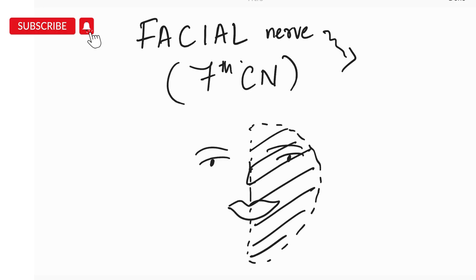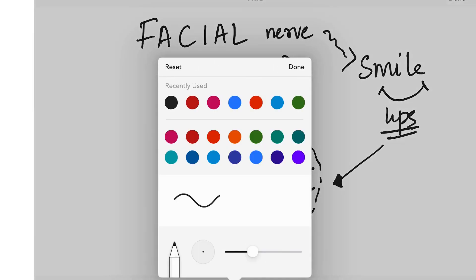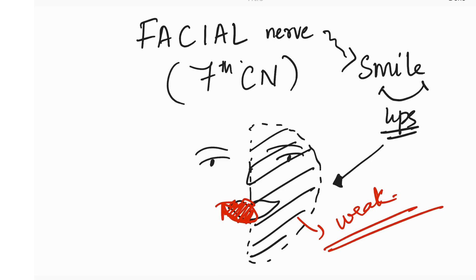Next is the facial nerve, the seventh cranial nerve, which is why we smile. If one side is affected — a lower motor neuron type of seventh nerve palsy — we look at the lips. The facial nerve makes you smile, so if the affected side doesn't work, when you smile the lips will be pulled to the opposite side, deviating away from the affected side.